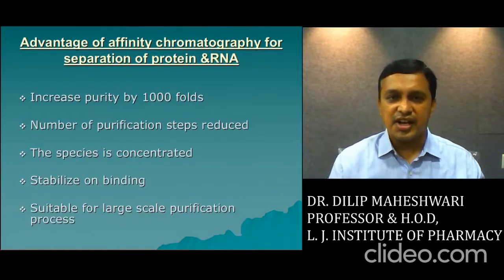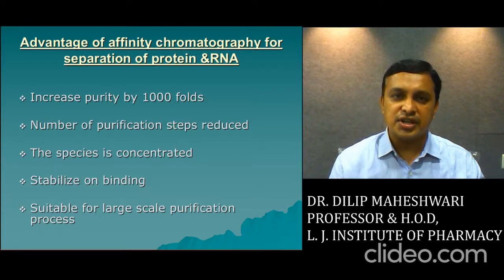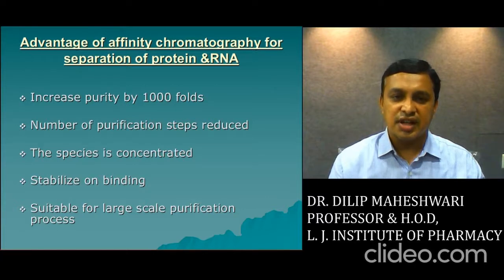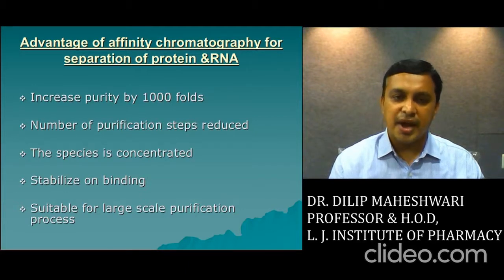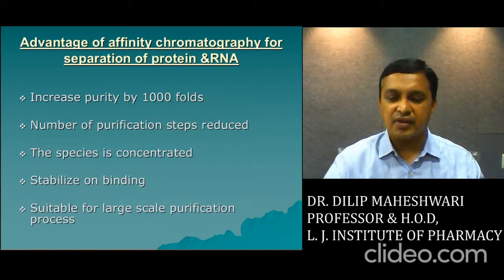The advantages of affinity chromatography for the separation of protein and RNA: this technique is useful for the separation and purification of protein substances, biological substances, RNA, DNA, antigens, and antibodies. The main advantages include: purity increased by up to 1000-fold, the number of purification steps is reduced, the species is very concentrated at the end, the compound is stabilized on binding, and it is suitable for large-scale purification processes.